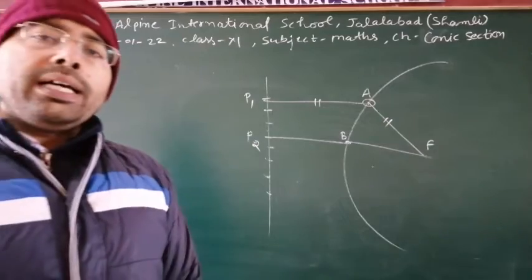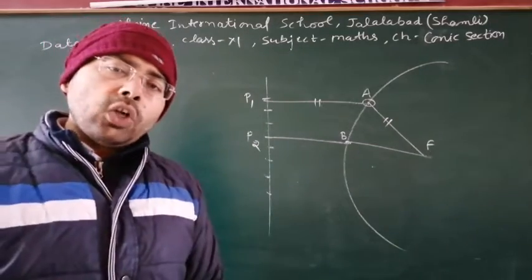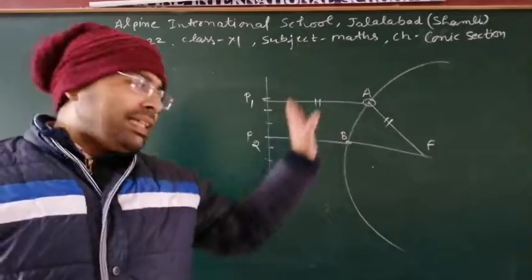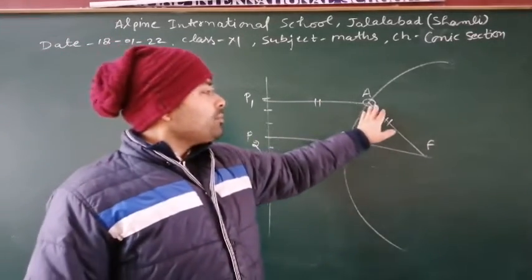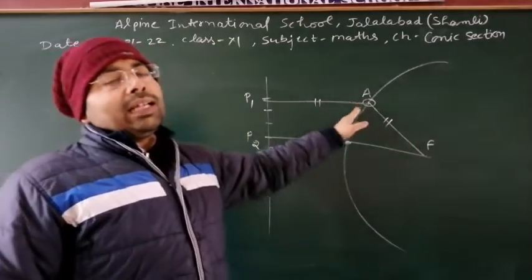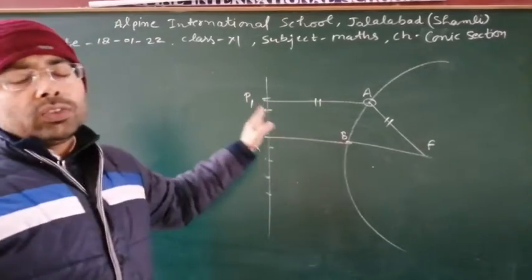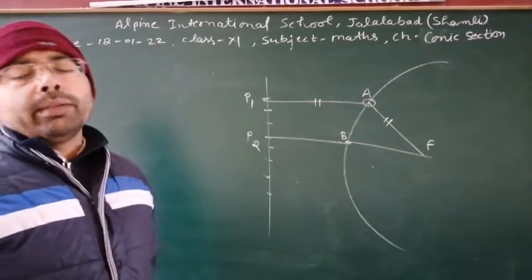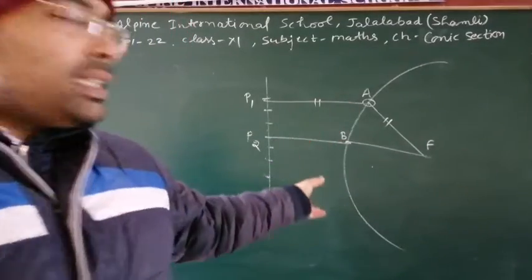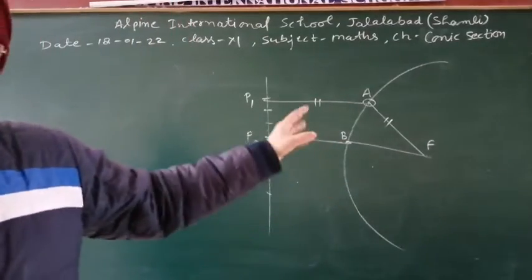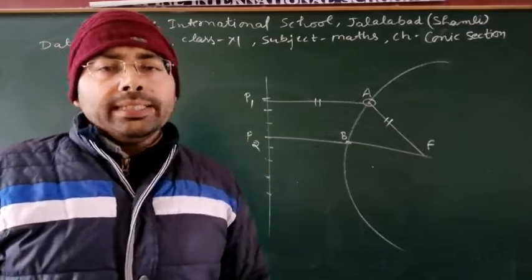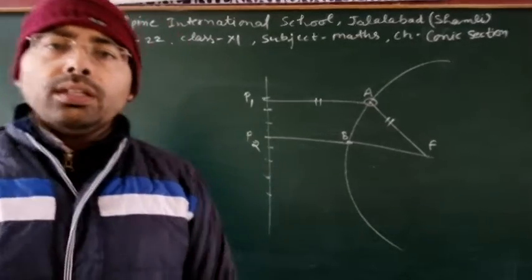Remember: parabola is the locus of a point which moves in such a way that the distance of any point from the focus as well as from the fixed line always remains constant. And due to this, this is the structure of parabola.